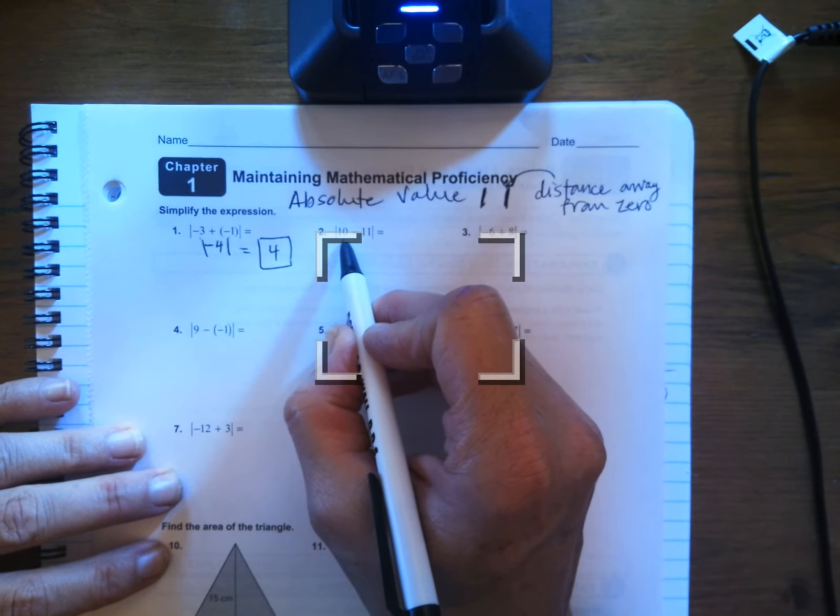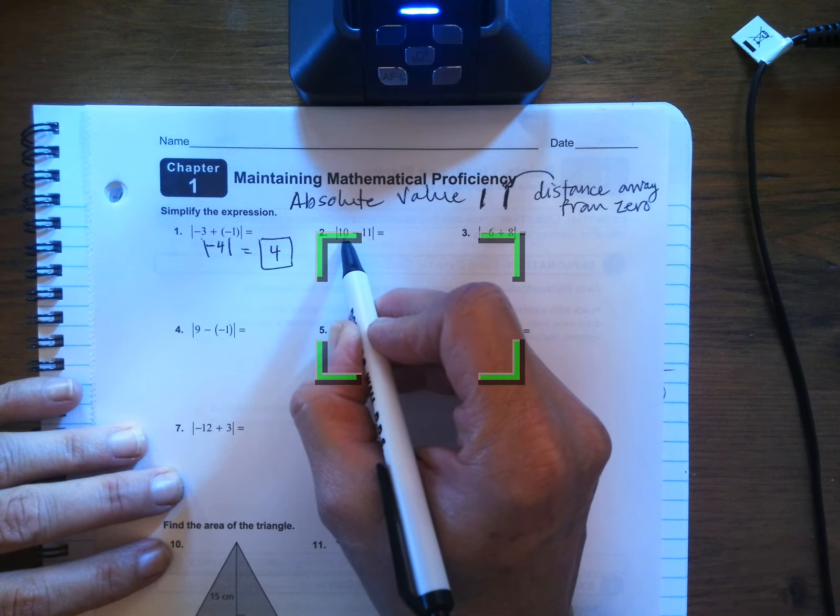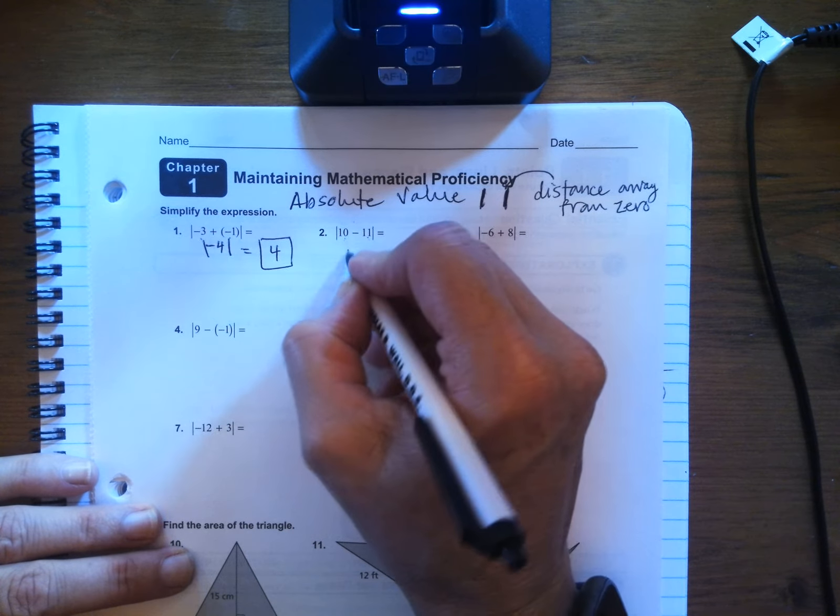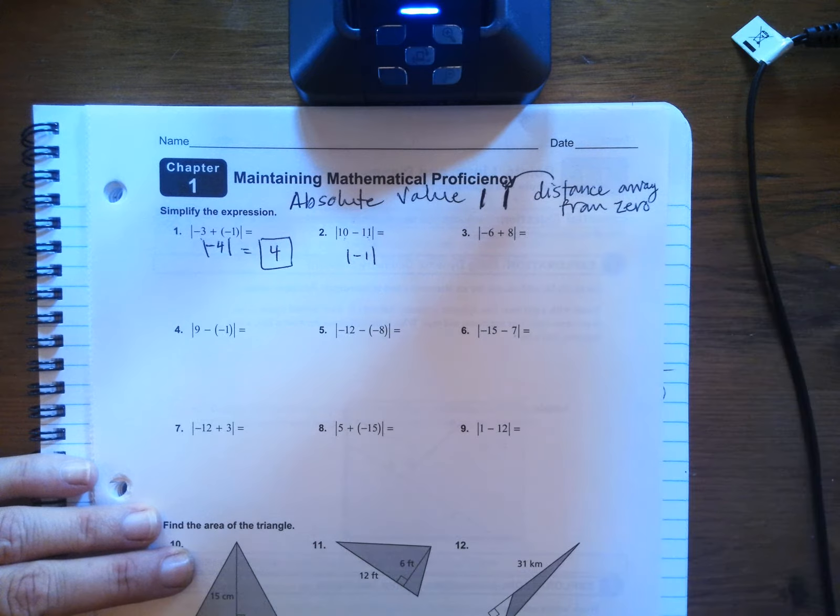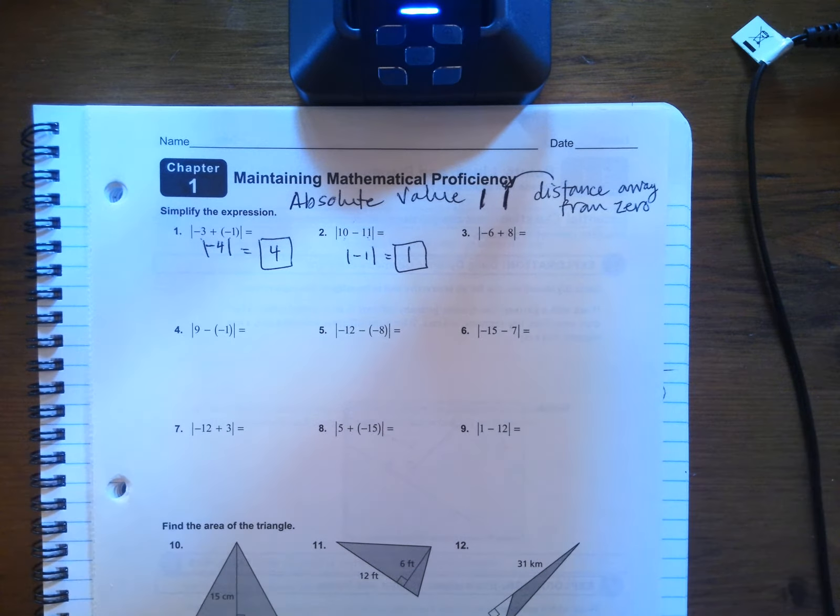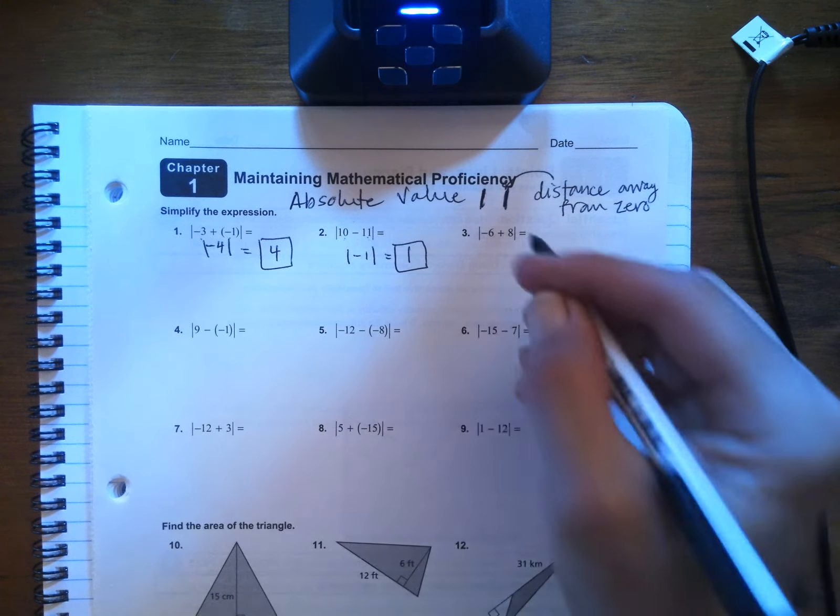Again, for number two, you do 10 minus 11. So it's like 10 positives and adding 11 negatives. So this is actually the absolute value of negative one, which of course is one away from zero. So always put a box or a circle around your answer as well.